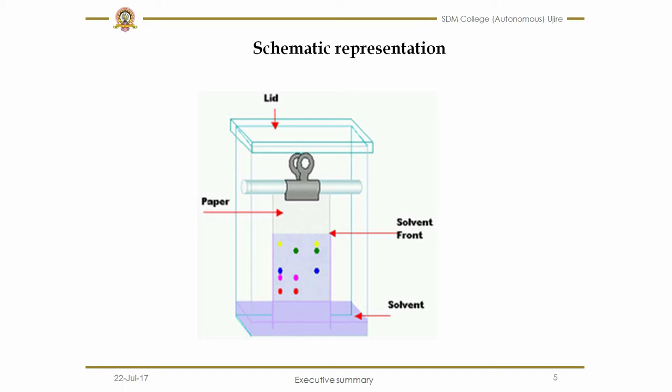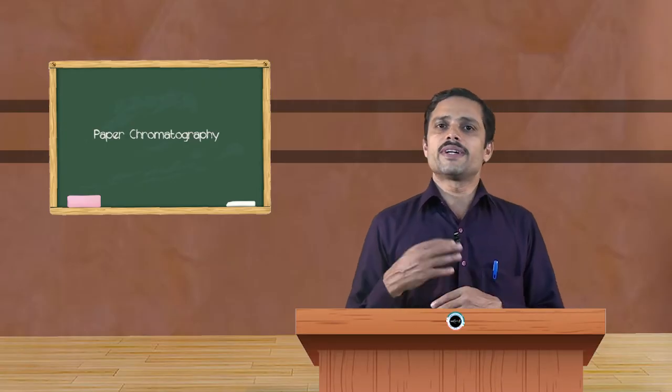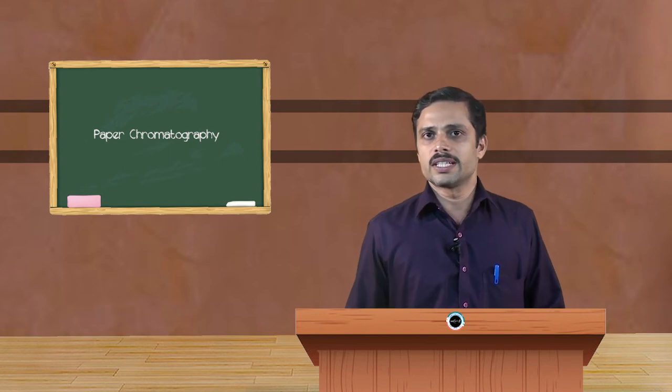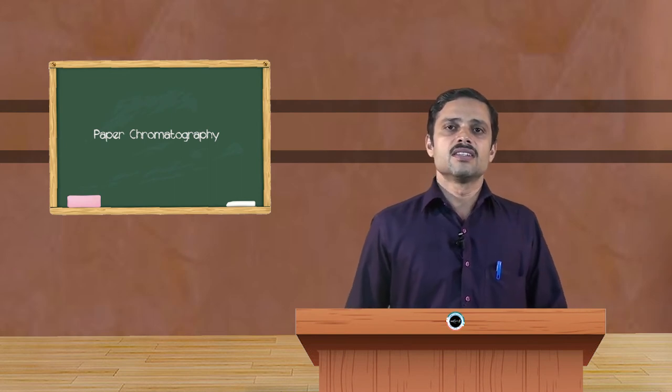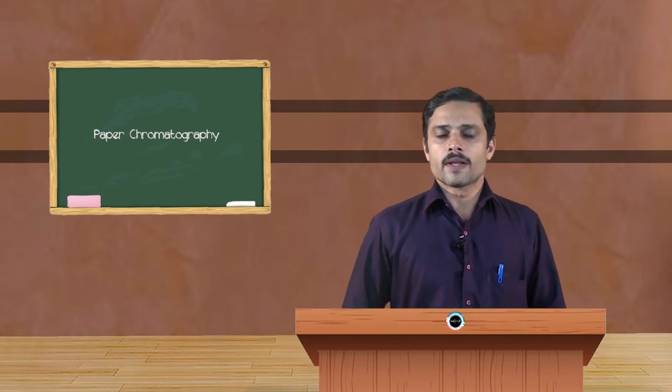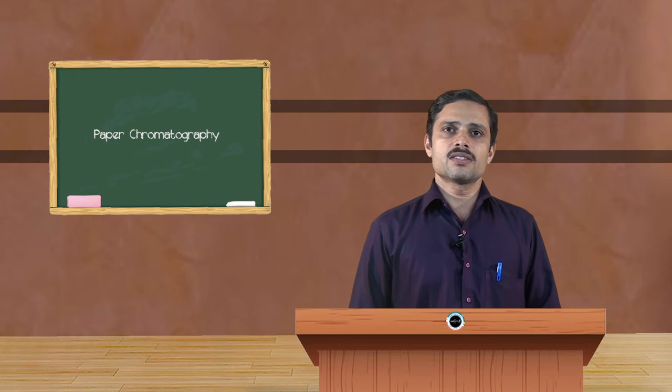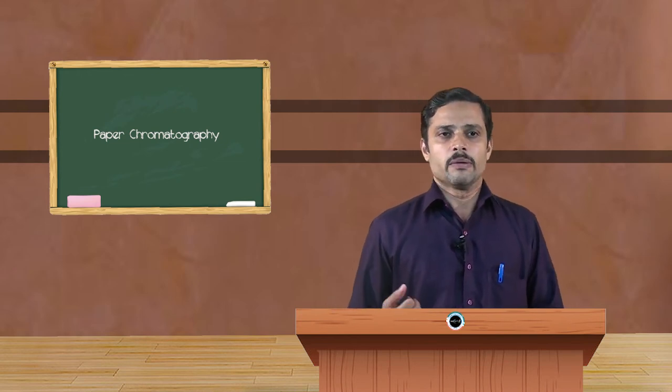If the components present are colored ones, it is easy to visualize. We can visualize the color and based on the baseline to the solvent front, till the solvent has run, we can calculate the retention factor value. If there is no better separation, then one has to change the solvent. If you have taken a single solvent, then try with a different solvent. Even if it is not possible again, then take a mixture of solvents, because the polarity should vary. Mixing polar and non-polar solvents or more polar or less polar solvents, we can achieve better separation.